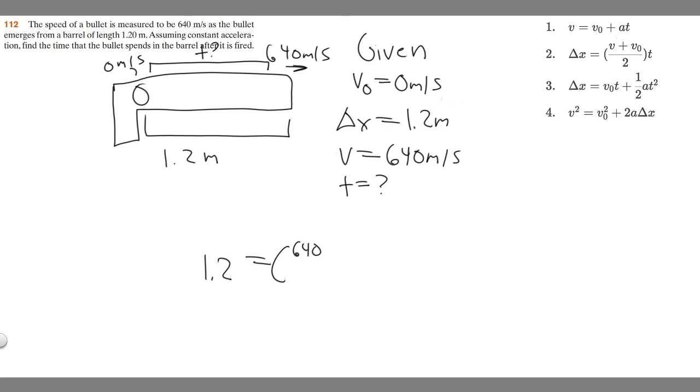So 640 plus the initial, which we know is zero, because it starts from rest, over 2 times t, which is what we're solving for. So we just leave it as t. So 640 plus 0, 640. And then 640 divided by 2 is 320.